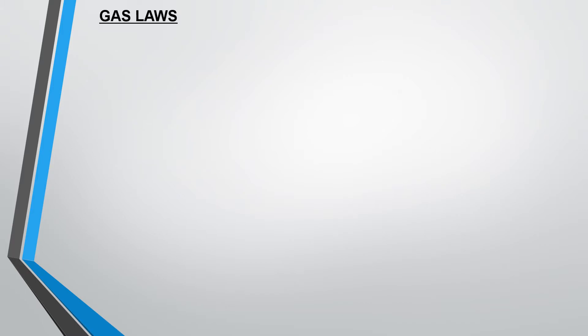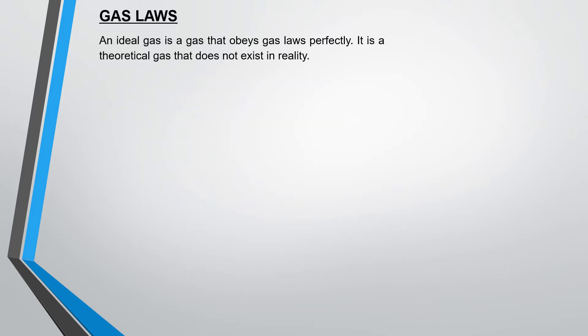Gas laws can be explained using ideal gas. Ideal is something that is perfect in nature. So when we're talking about an ideal gas we are talking about a particular gas which obeys all the gas laws perfectly. However this gas doesn't exist in reality. In reality we have real gases like carbon dioxide, oxygen, nitrogen etc. Ideal gas is something that is theoretical in nature and that is used to do certain calculations.